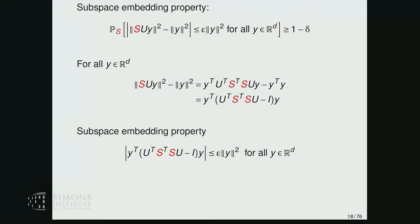We want to establish the subspace embedding property: the property that the Euclidean lengths of all vectors in our subspace of interest should be simultaneously preserved by our sketch. We get a basis for the subspace—call it matrix U. This matrix is N by D; it's a basis for a D-dimensional subspace of R^n.